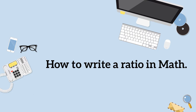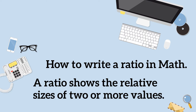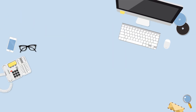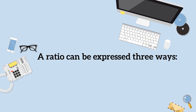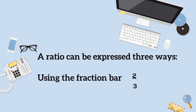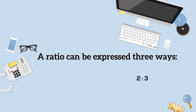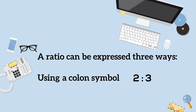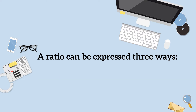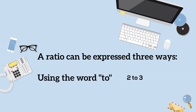A ratio shows the relative sizes of two or more values. A ratio can be expressed three ways: using a fraction bar, using a colon symbol, and using the word 'to'. Let's look at three examples.